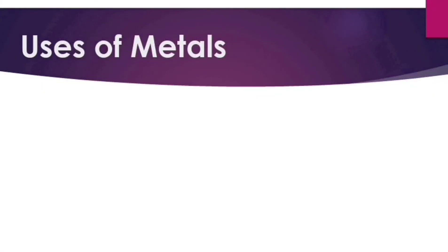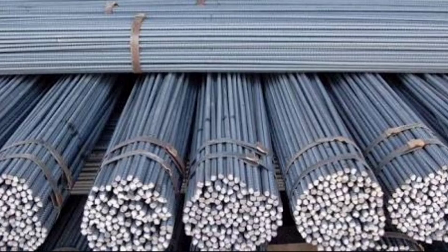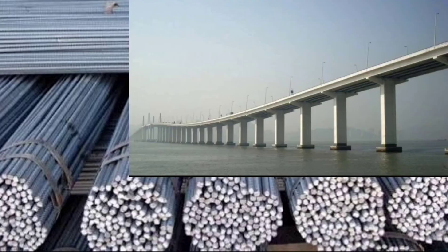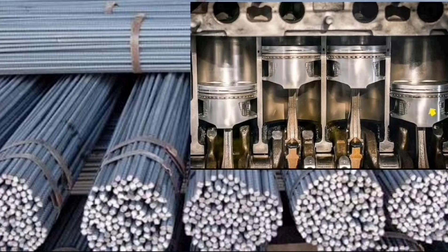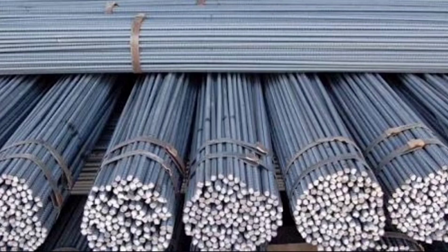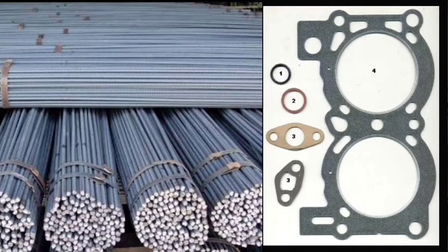Metals are closely packed atoms. Uses of metals: Iron is used for making bridges, engine parts, iron sheets and bars.